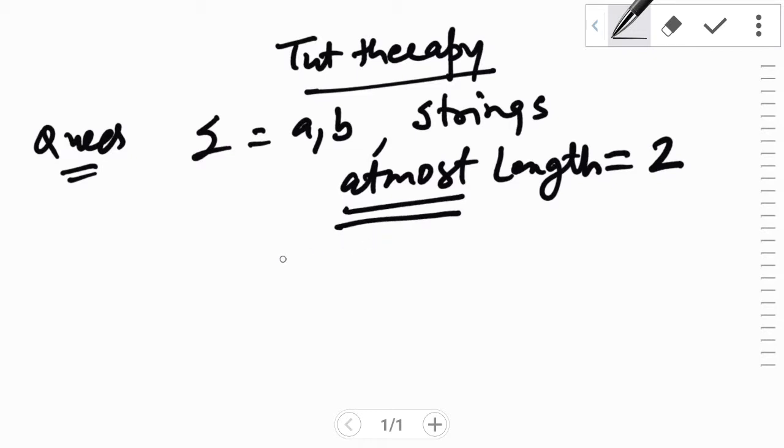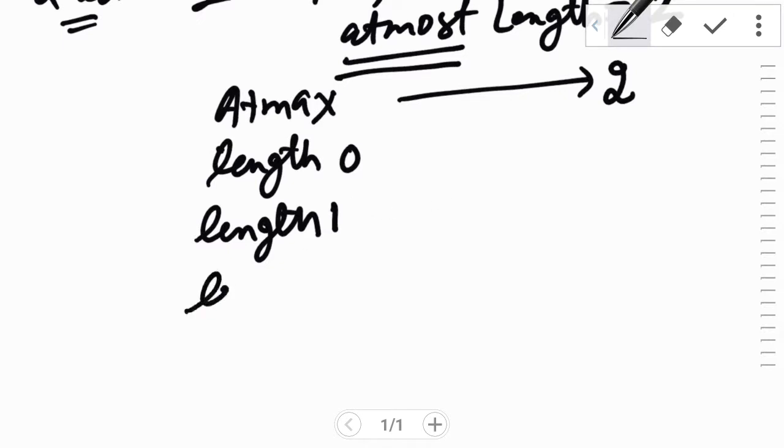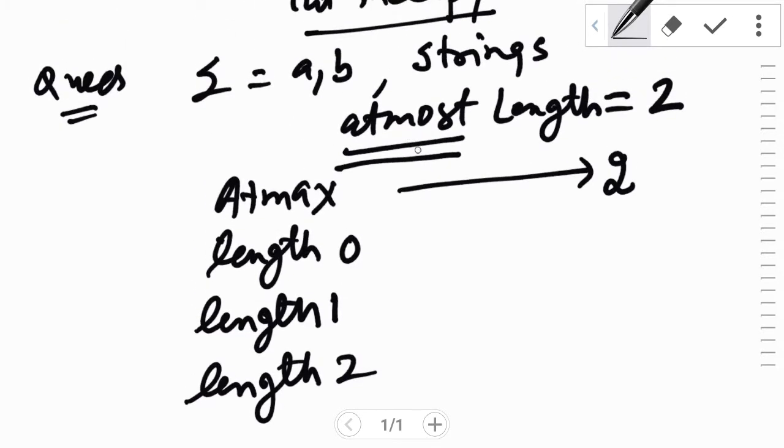So this question is a bit different from what we have studied till now. The concept of at most comes here. At most means that at max the string length should be, can be 2. Therefore all the strings of length 0 can be accepted by a DFA, all the strings of length 1 can be accepted by a DFA, all the strings of length 2 can be accepted by a DFA.